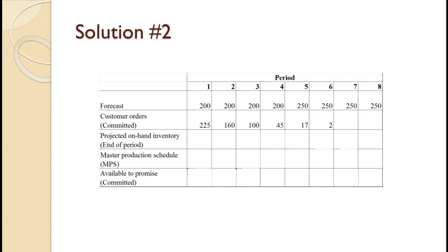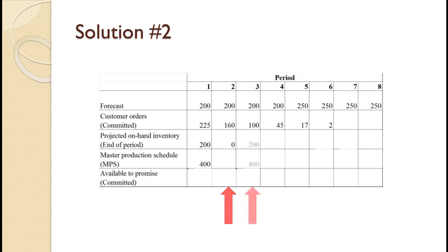800 in the first month equals 200 per week, and 1000 in the second month equals 250 per week. The committed orders are shown on the screen. For week 1, our beginning inventory of 25 is not high enough, so we schedule production of a lot size of 400. To calculate ending inventory, we use the committed orders of 225 since they exceed the forecast of 200: 25 plus 400 minus 225 equals 200. For period 2, we have enough inventory, so no production is required: 200 minus 200 equals 0. For period 3, we have no inventory, so we schedule production of 400: 400 minus 200 equals 200.